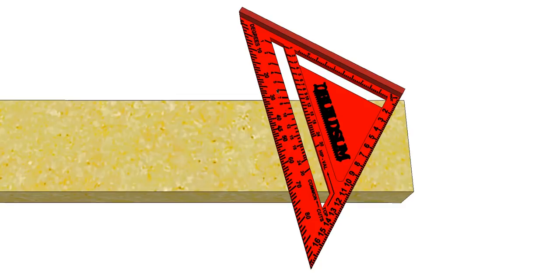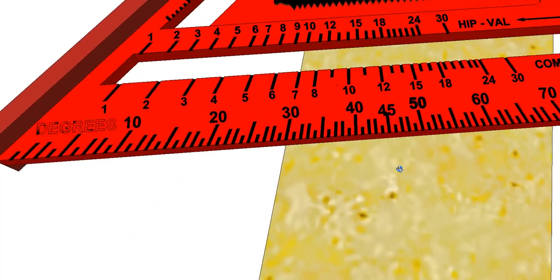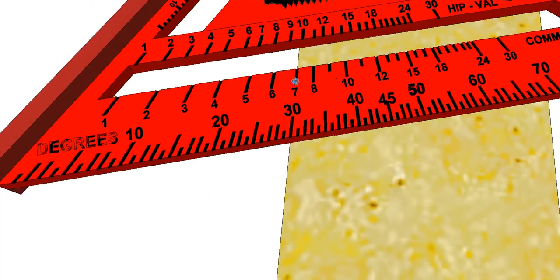If you have a look here, you'll notice that that 30 actually lines up with the seven here. So that's seven inches over 12, or seven inches rise per foot, and that's on the common rafter side of the scale.